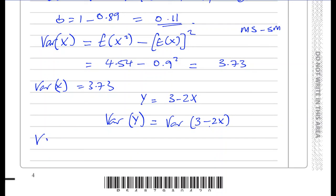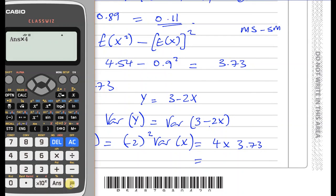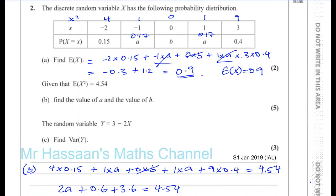We need to deal with the minus 2. The 3 doesn't affect the coding but the minus 2 does. Var(3 minus 2X) equals minus 2 squared times Var(X) — you square the multiplying number. So it's 4 times Var(X), which is 4 times 3.73, giving us 14.92. So the variance of Y is 14.92. That's the answer to the last part of the question — question number two, I hope that was clear.